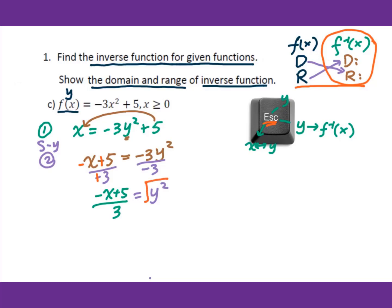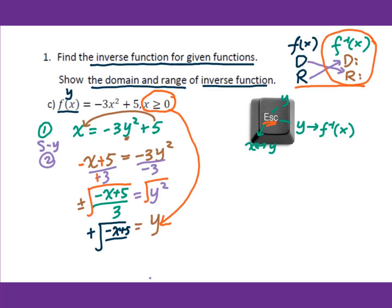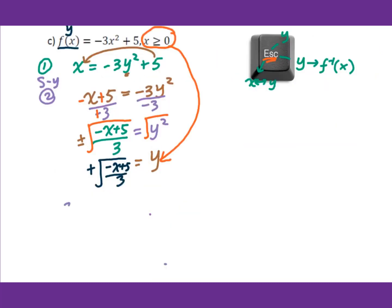Then we take the square root of both sides. Don't forget the plus or minus. Since this y is the domain of the original function — because we switched x and y — and y is greater than or equal to 0, we only choose the positive root. So we get y equals square root of (negative x plus 5) over 3.